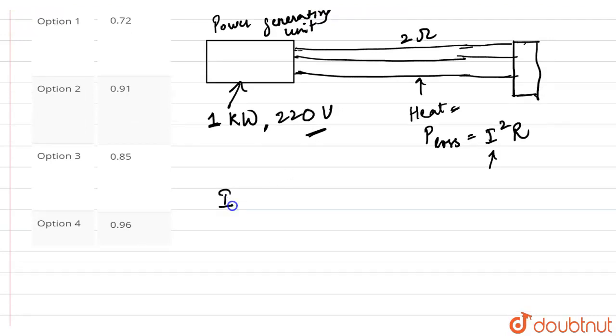We need to calculate the current in these transmission lines. The current is I equals power divided by voltage, since power equals current times voltage. Therefore, I equals 1000 divided by 220 volts. Our current comes out to be 50 divided by 11 amperes.